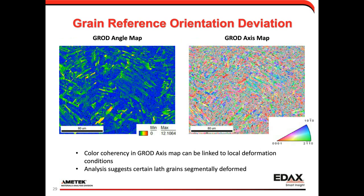We can also look at deformation with a GROD, or Grain Reference Orientation Deviation map, in both an angle map and an axis map. With GROD, we first calculate an average orientation per grain, then look at the misorientation of each point relative to that average — as an angle on the left or a misorientation axis on the right. We can see deformation within some of the laths, and in the axis map, structured misorientations appear as solid colors, showing a grain with some coherency along the length of the lath.